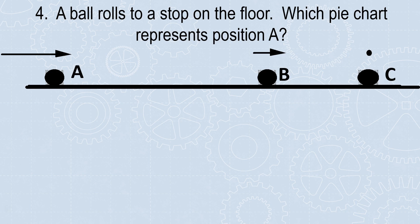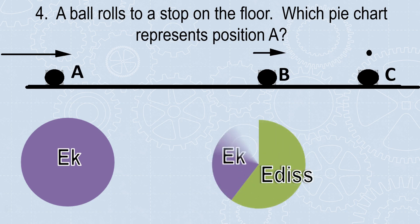Here we have a ball rolling to a stop. Let's draw some pie charts. Here we have all EK at A. It's moving. It hasn't had a chance to dissipate. It just started moving. Here, it's slowed down. We can see that arrow's shorter, so there's less kinetic energy. This also means that the kinetic energy became dissipated energy. Something had to happen to it. At the very end, it's not moving. It's not off the ground. It's not stretched or compressed. So that means that all of the energy was wasted as thermal energy. It was all dissipated.